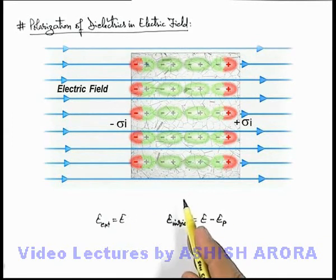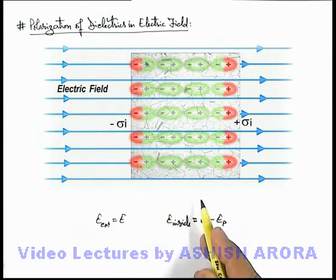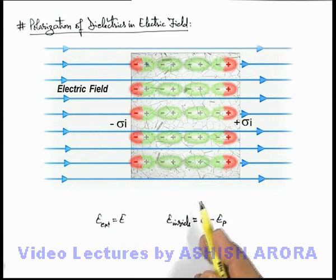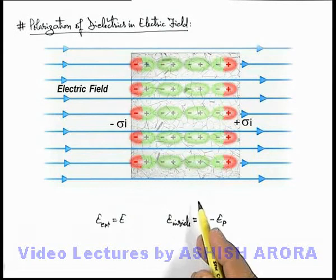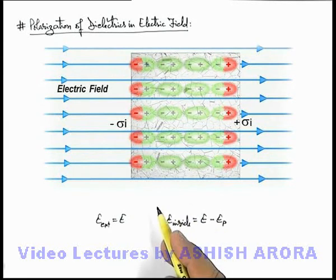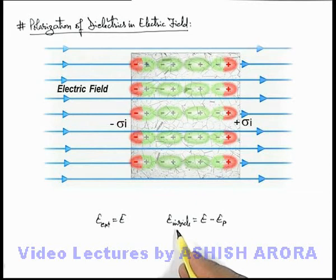And the charges which are induced on the surfaces of the dielectric, which are +σi and -σi, these will produce an opposite electric field Ep. And due to this the net electric field inside is decreased and this net electric field is accounted.